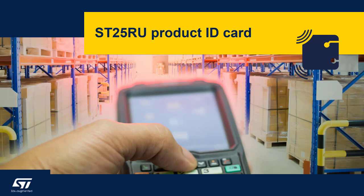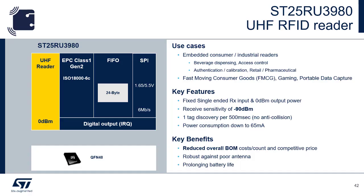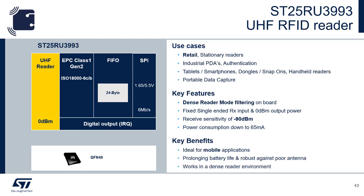Now we'll go over ST's solutions for the UHF reader market. The ST25RU3980 is designed specifically for fast-moving consumer goods, allowing one tag discovery every 500 milliseconds. There is no anti-collision built into this IC, but it is ideal for low-cost, low-power consumption readers. The ST25RU3993 is ideal for mobile applications where you need to prolong battery life and work in a dense reader environment, offering 0 dBm of power output with a low power consumption of 65 milliamps.